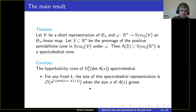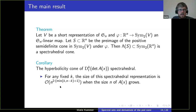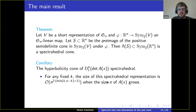One can do some analysis on the size of the matrices describing this hyperbolicity cone. For fixed number of derivatives k, the size of the matrices grows only polynomially. If you increase k and n simultaneously, it will be exponential.